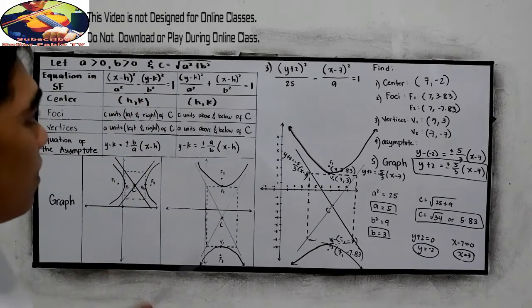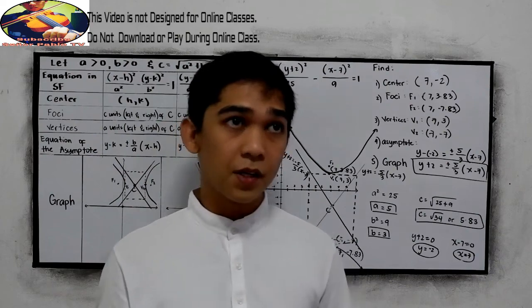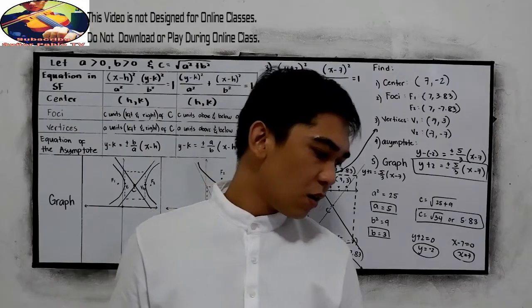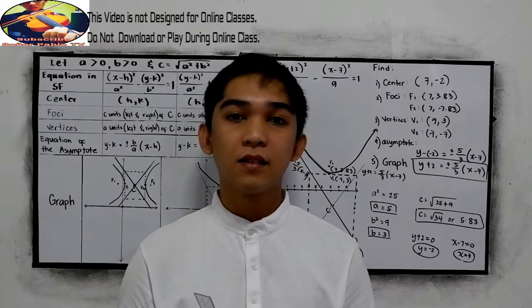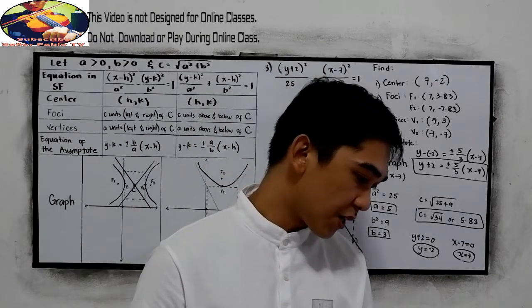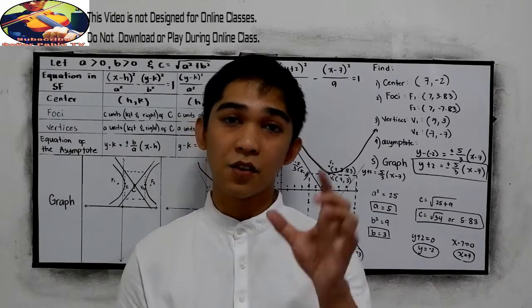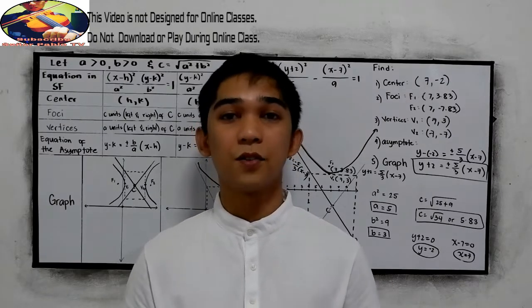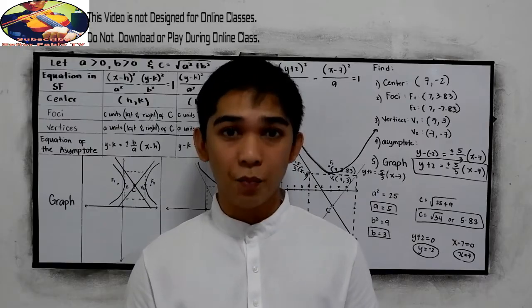That's it. That's the parabola. Your next example will be what if the given is the foci and the distance of a point, the distance of our foci, the distance of the foci to the center, and given the vertices of the or the coordinates of the foci. That will be your next lesson. Thank you for watching Senior Pablo TV.